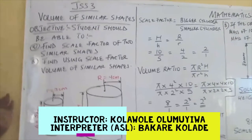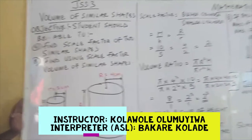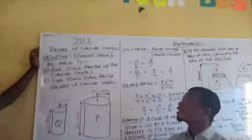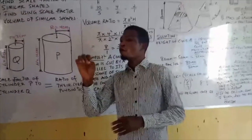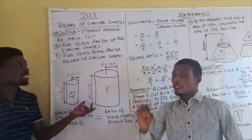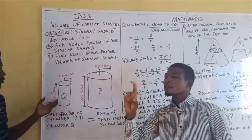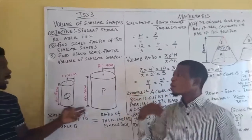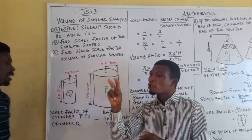All right, today we're taking volumes of similar shapes again, continuation of where we stopped. But today we are focusing on cylinder and cone. Here we have a smaller cylinder Q and the bigger cylinder P.